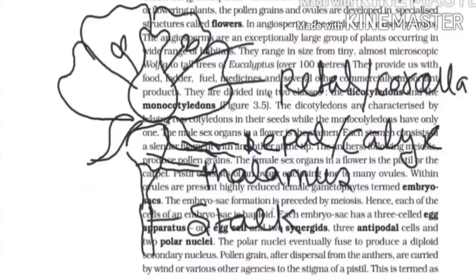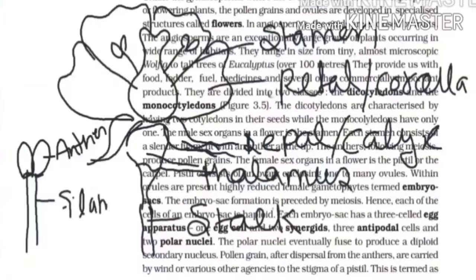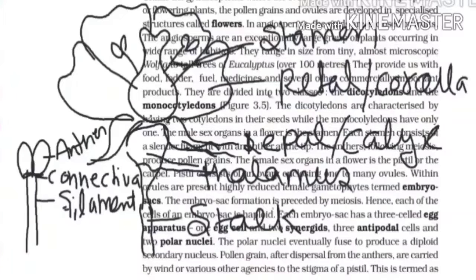We have the male reproductive organ — these are the stamen. The stamen diagram is just like that. These are the anther and the filament. These are the male reproductive organ, the stamen, which has three parts: anther, connectiva, and filament.